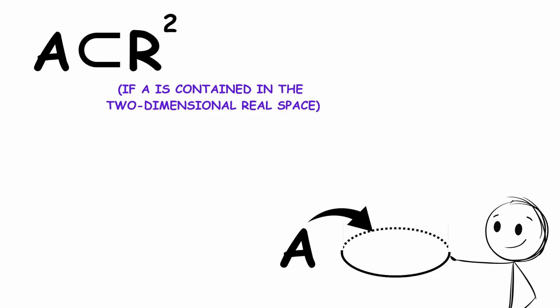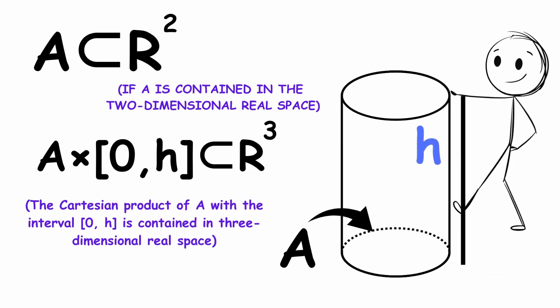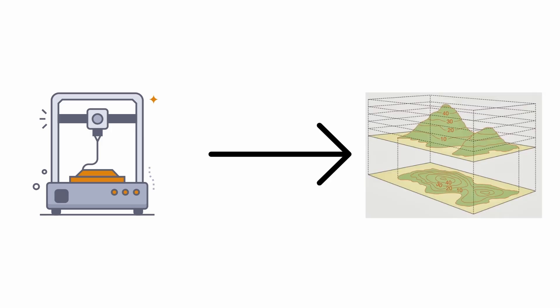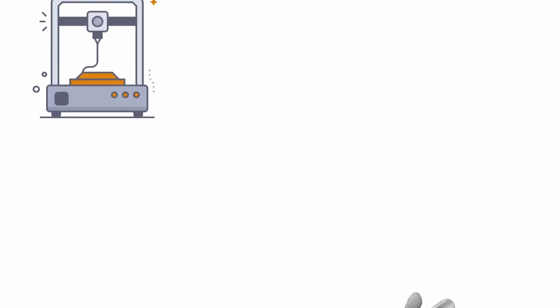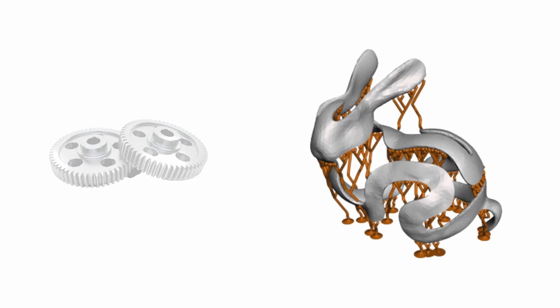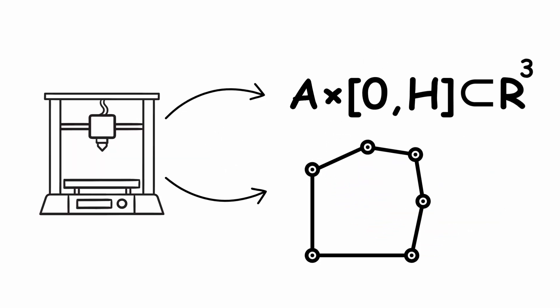then the Cartesian product of A with the interval 0H is contained in three-dimensional real space. Represents its extrusion to a height H. 3D printers operate by interpreting these profiles as contours in each horizontal layer. Even complex shapes, such as gears or organic structures, start from 2D profiles, defined by mathematical functions or discretized polygons.